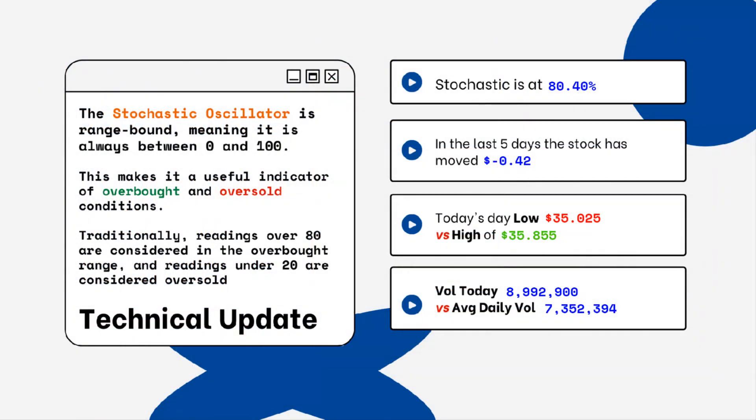You can see on the right side where the stochastic level is on this particular stock. This is a technical update — you want to look for overbought and oversold conditions. Readings over 80% are considered overbought and readings below 20% are considered oversold. You want to be aware of this when looking at a particular stock.